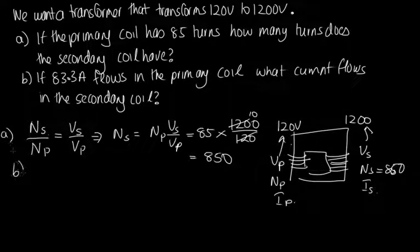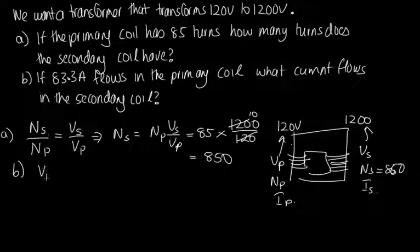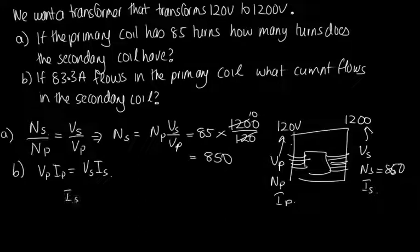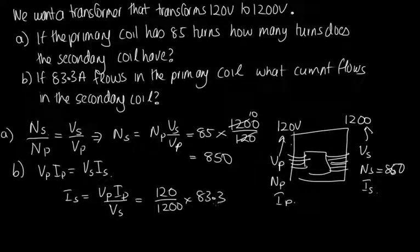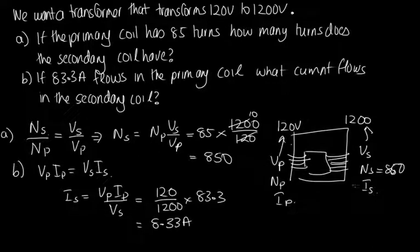For part B, with 83.3 amps in the primary coil, we use V_P × I_P = V_S × I_S, so I_S = V_P × I_P / V_S = 120 / 1,200 × 83.3 = (1/10) × 83.3 = 8.33 amps flows through the secondary coil.